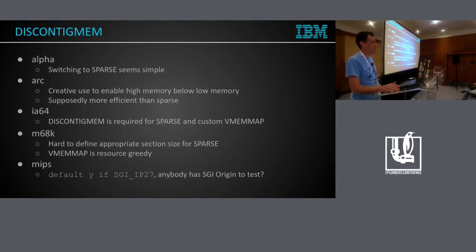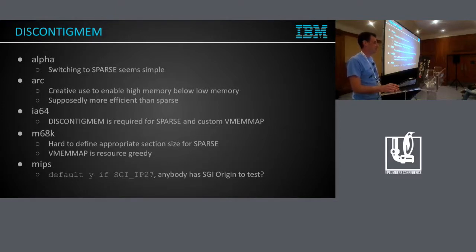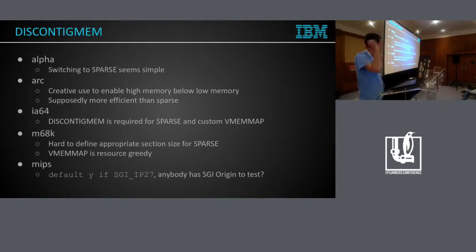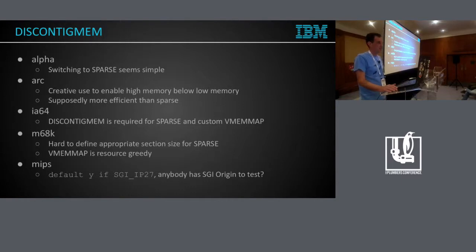ARC is the most interesting one — they use discontinuous mem to have high memory below low memory. They define a node with low memory at high physical addresses and another node with high memory at low physical addresses. Since the low-memory-address node is optional, that's what they use. There's a comment in code saying sparse is not as efficient as discontinuous, so they stick with that. I tried to send a patch to their mailing list and nobody cared.